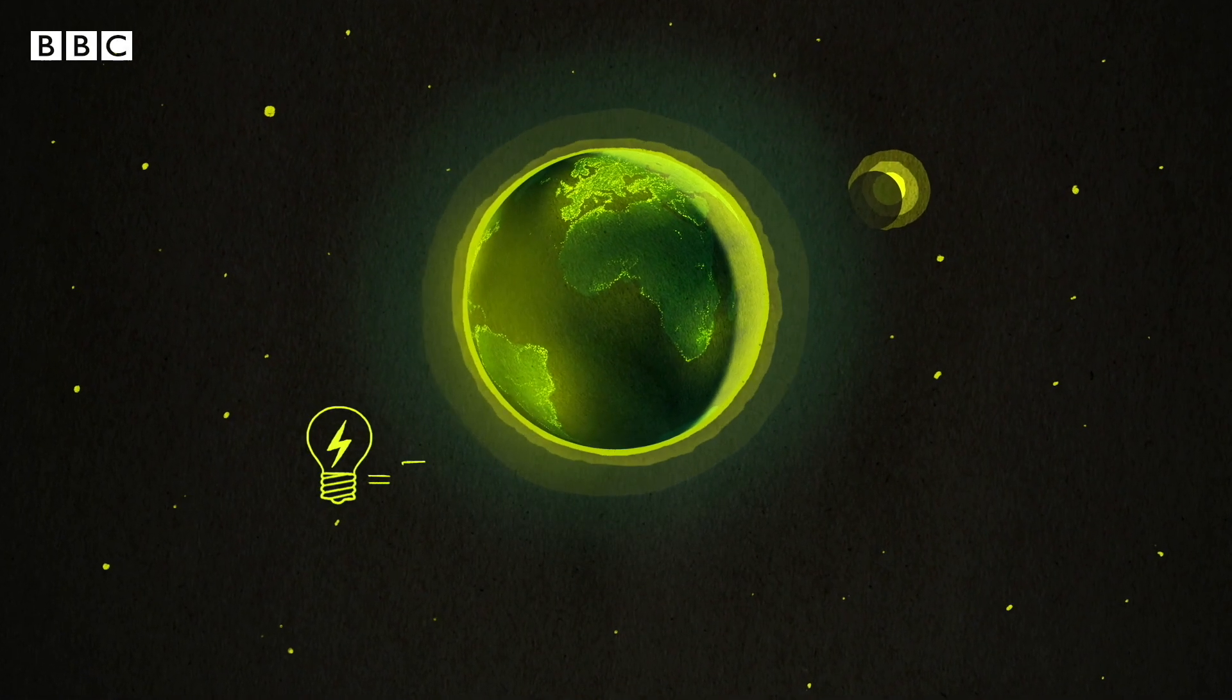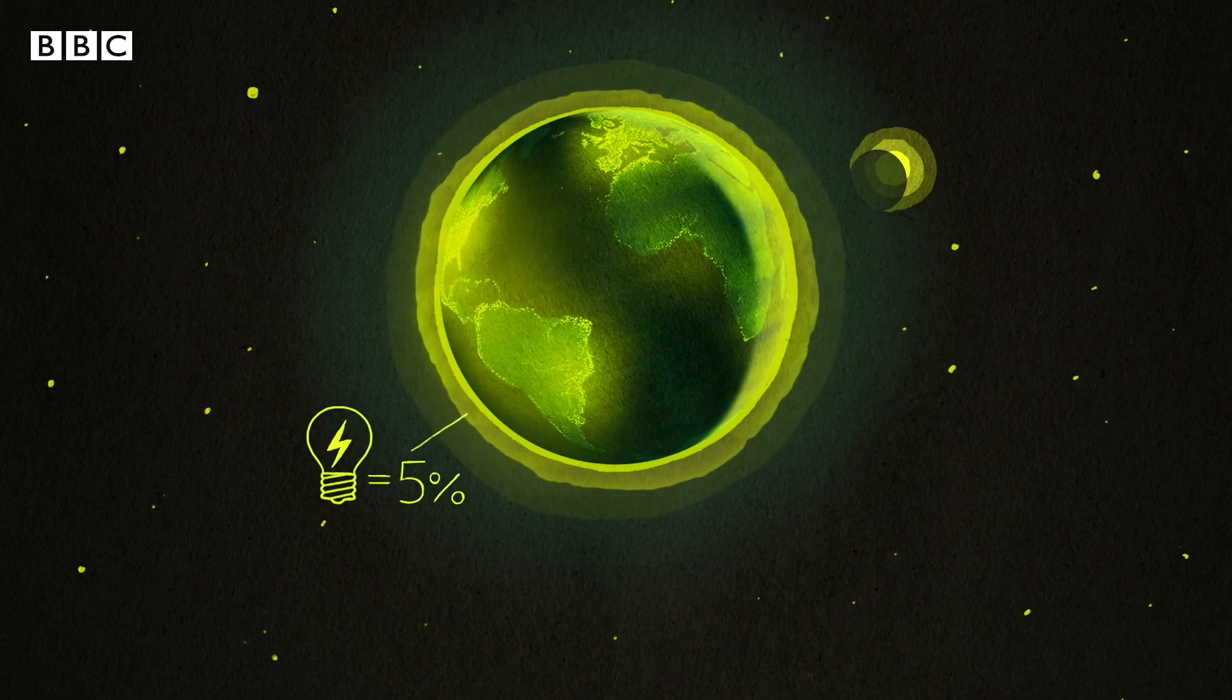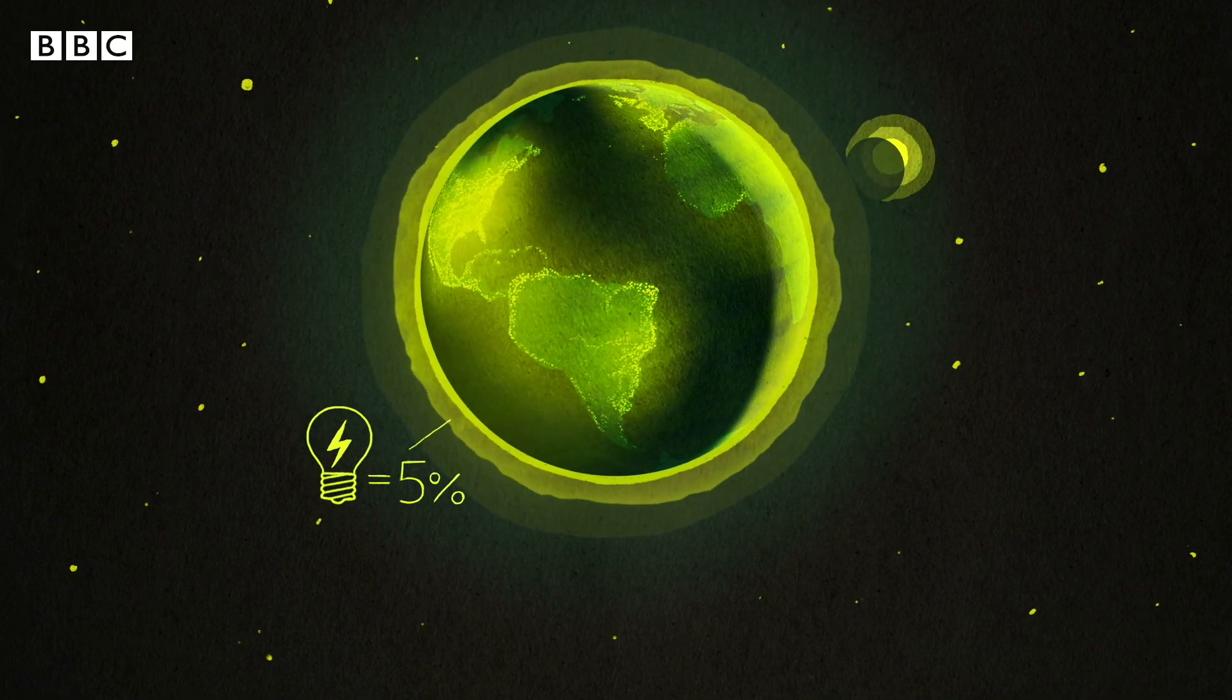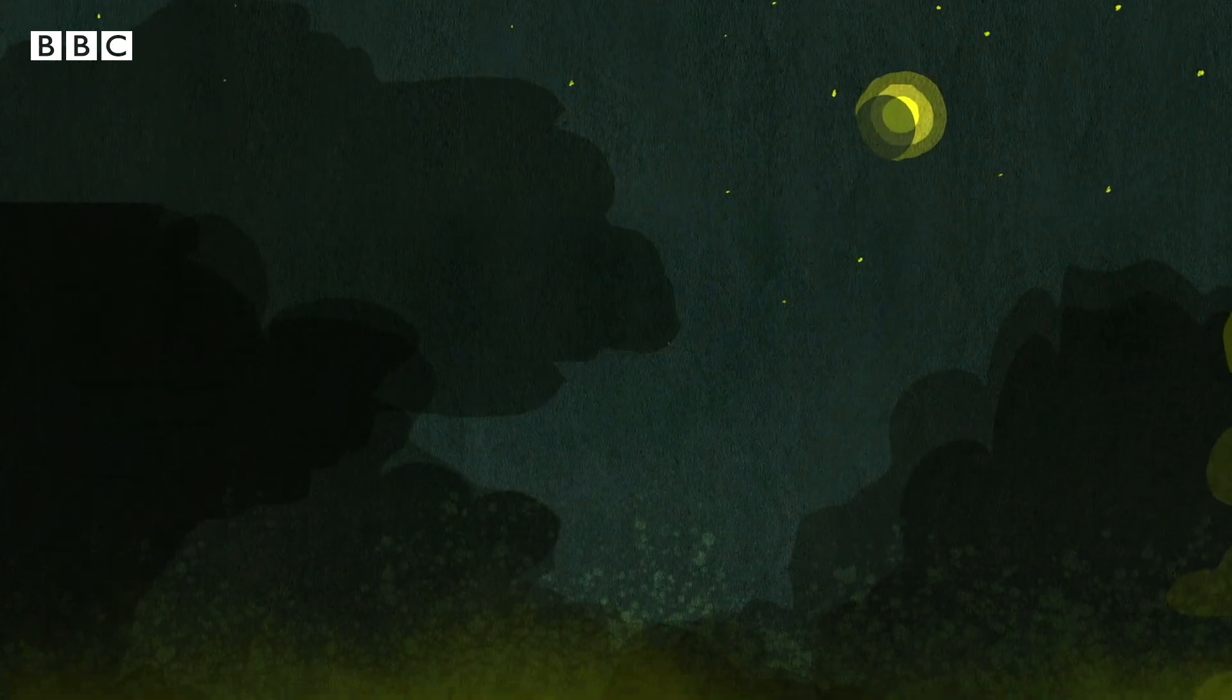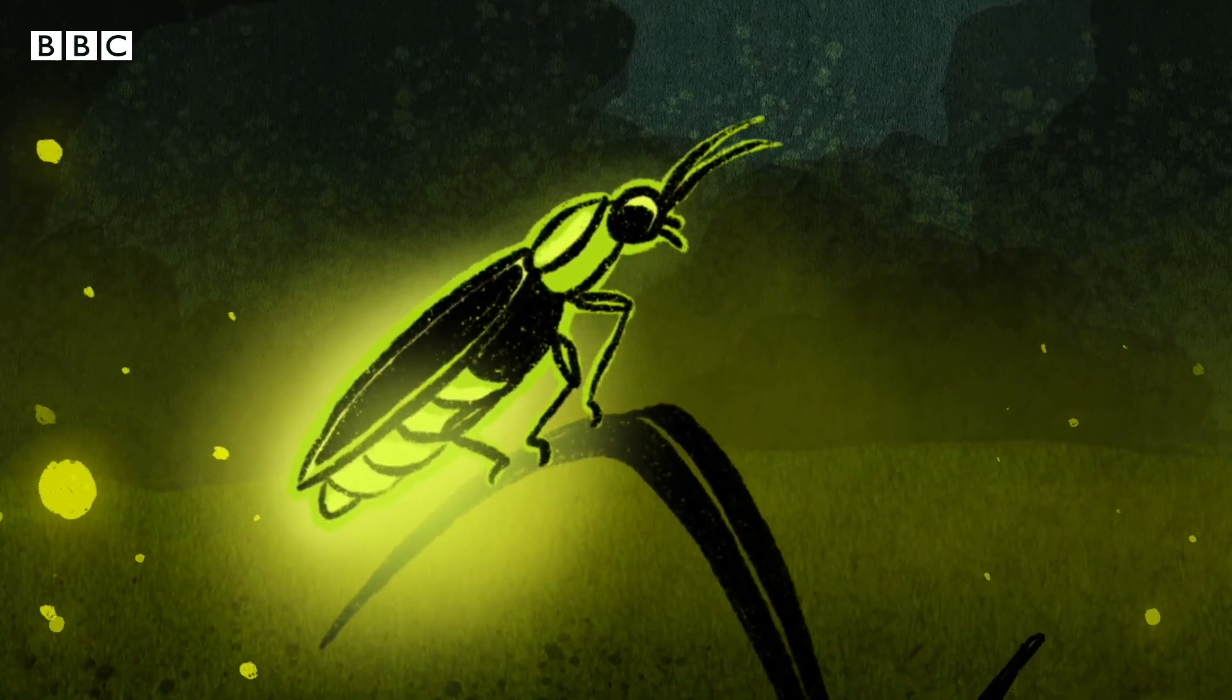Electricity for lighting accounts for around 5% of greenhouse gas emissions. So how can we make it more efficient? It seems fireflies could hold the answer.